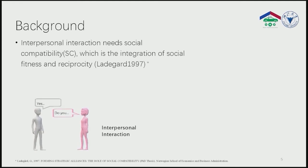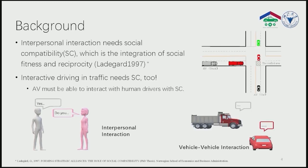Social compatibility is the integration of social fitness and reciprocity, which represents an agent's responsiveness in social interactions. Similarly, automated vehicles must have social compatibility when interacting with human drivers.